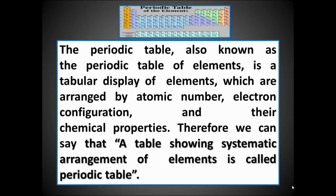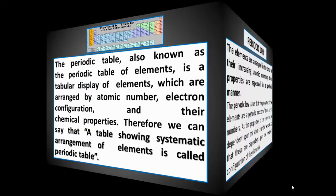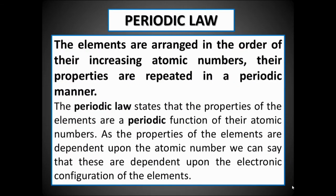The periodic table, also known as the periodic table of elements, is a tabular display of elements which are arranged by atomic number, electron configuration, and their chemical properties. Therefore, a table showing the systematic arrangement of elements is called a periodic table.